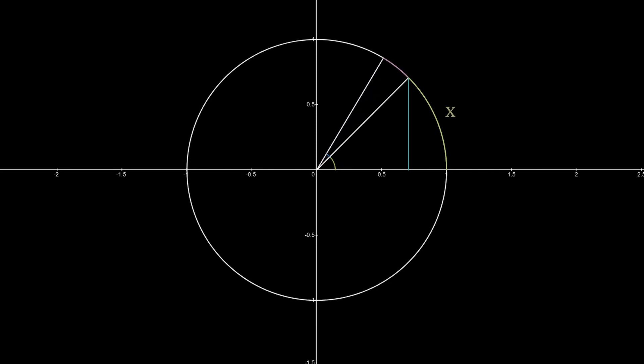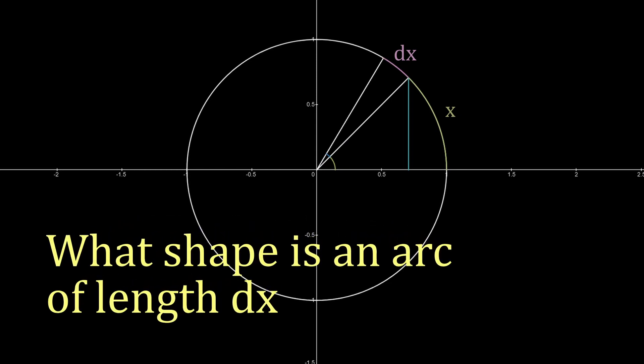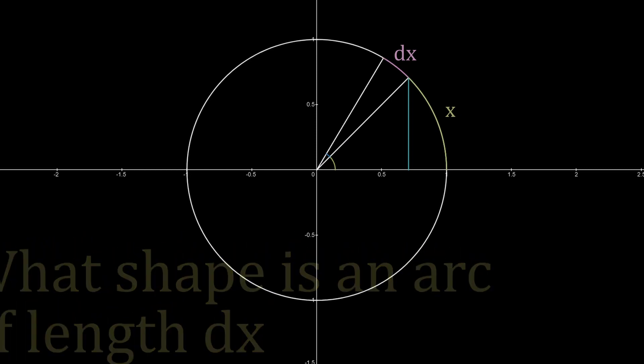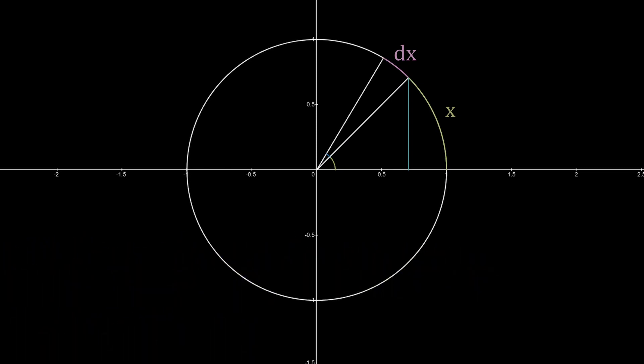Similarly, think of dx not as the change in angle, but the change in the length of the arc. Now, riddle me this. What shape is an arc of length dx? The obvious answer would be, it's curved. But think again.